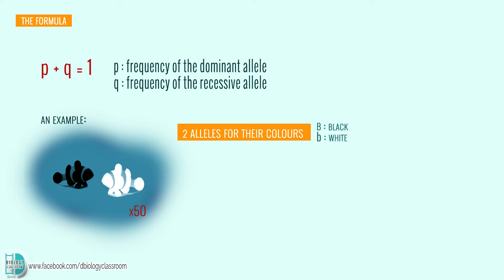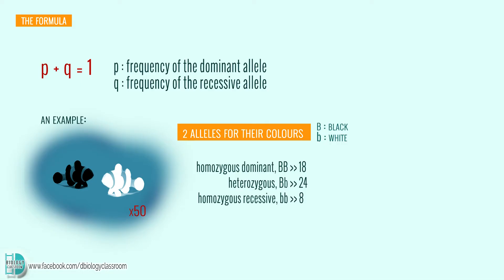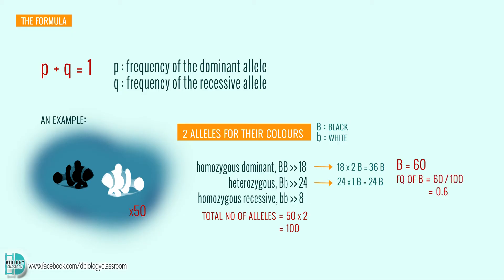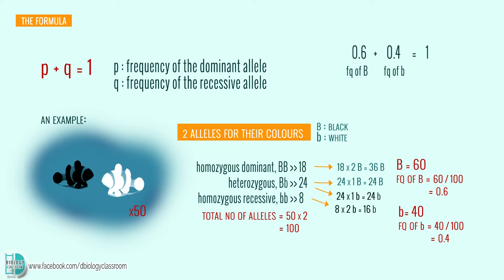Let's say there are 50 fish in the population: 18 are homozygous dominant, 24 are heterozygous, and 8 are homozygous recessive. Each fish has two alleles, so the total number of alleles is 100. There are 60 big B alleles in the population, so its frequency is 60 over 100 equals 0.6. Similarly, small b has a frequency of 40 over 100 equals 0.4. When you add these two frequencies together, it equals 1 — that is what is meant by p plus q equals 1.